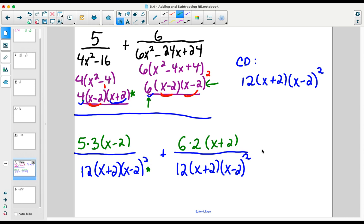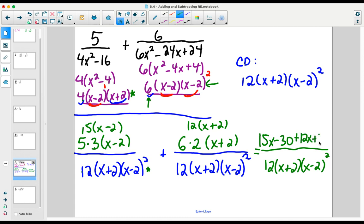Multiplying and simplifying with the common denominator, we're going to have 12(x+2)(x-2)². From the first rational expression, this is really 15 times x minus two, so that's 15x minus 30. This is really 12 times x plus two, which is really 12x plus 24.